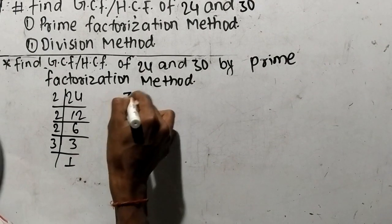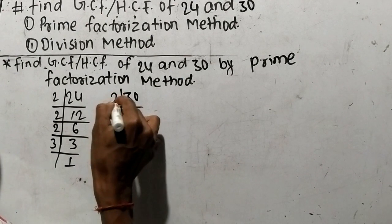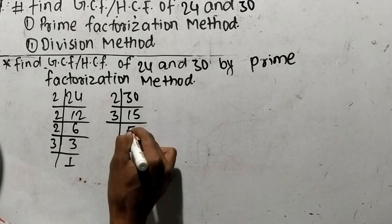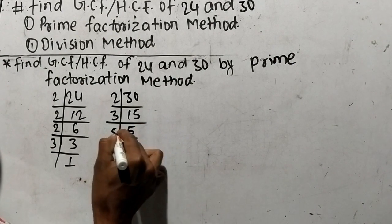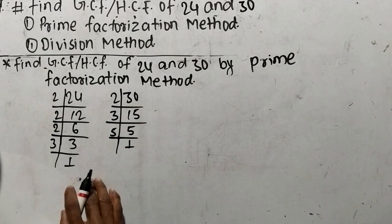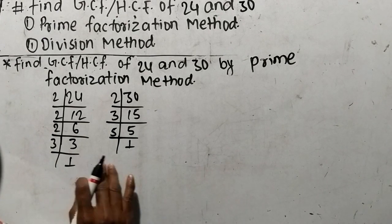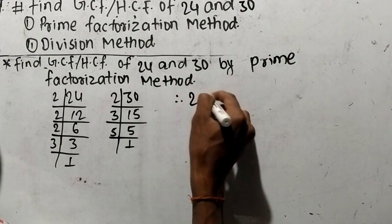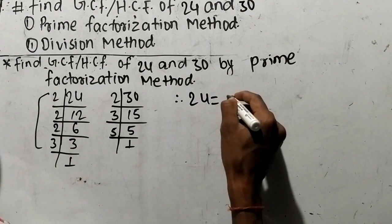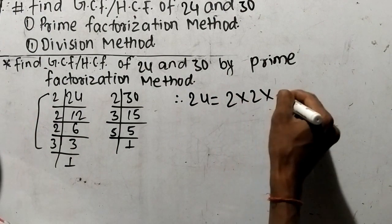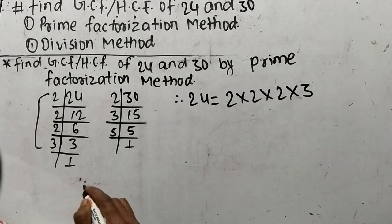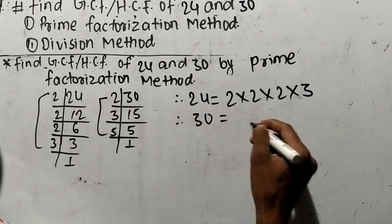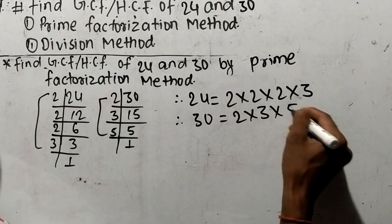In the same way we shall find out the prime factors of 30. It is 2 x 15 = 30, then 3 x 5 = 15, and 5 x 1 = 5. So we have found the prime factors of 24 and 30. We can write 24 = 2 x 2 x 2 x 3, and 30 = 2 x 3 x 5.